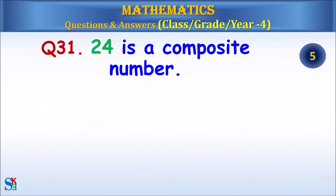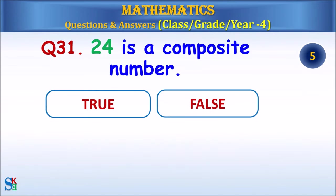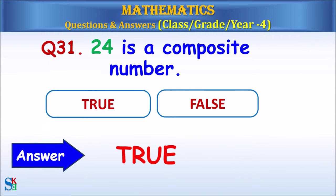Question 31: 24 is a composite number. True or false? The answer is true.